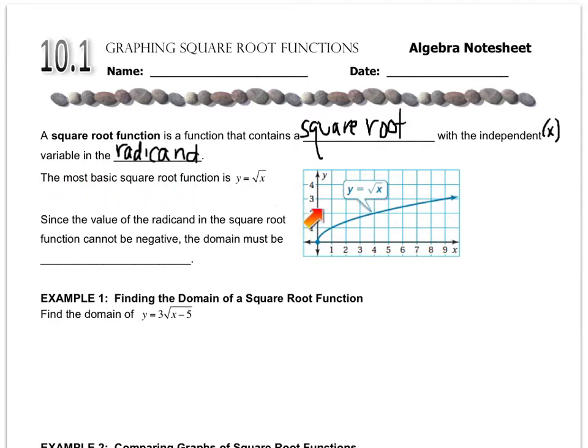And the most basic one is the one that's graphed, y equals the square root of x. Since the values of the radicand in the square root function can't be negative, because you can't take the square root of a negative number, the domain must be all real numbers as long as x is greater than or equal to 0.